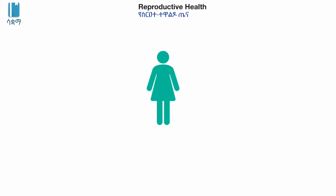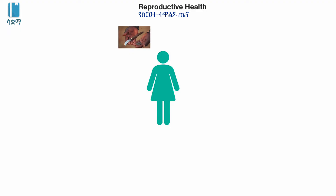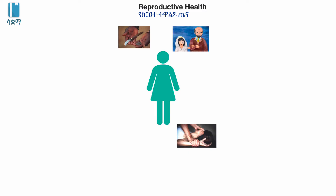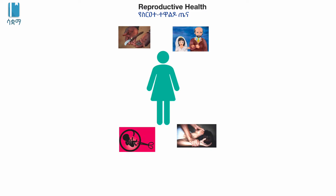Reproductive health issues include female genital mutilation and early marriage. This is a philosophy that is considered harmful to children. There is also legal abortion and sexual and transmitted infections. These causes lead to people's death.